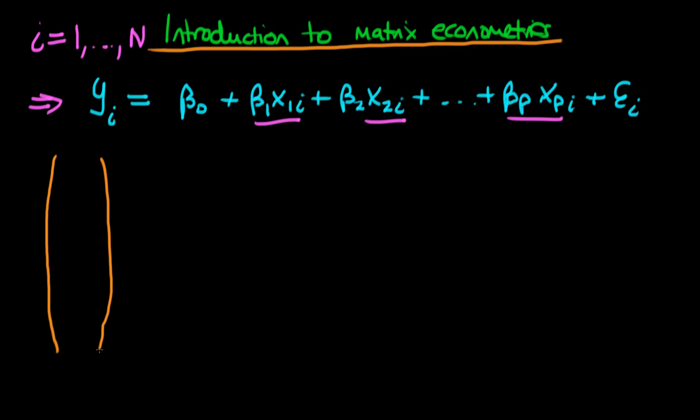So what we do in the matrix formulation of econometrics is that we stack each of our observations on top of one another. So our top observation is y1 and then we have y2 and we sort of continue all the way down until we get to the nth observation of the dependent variable which I write yn.